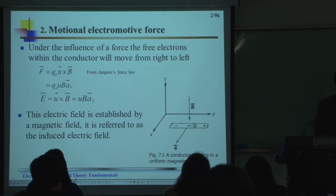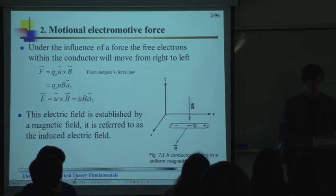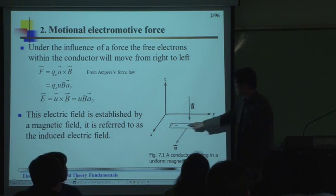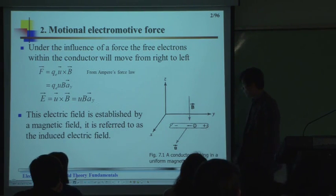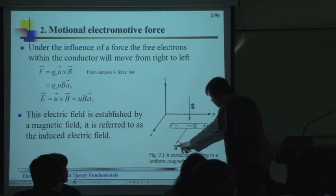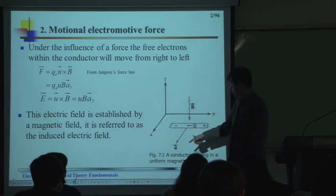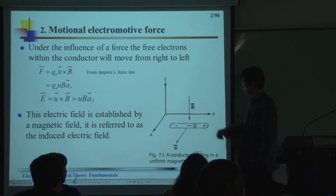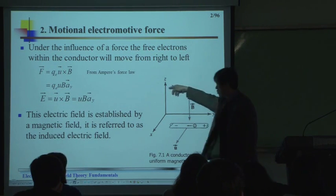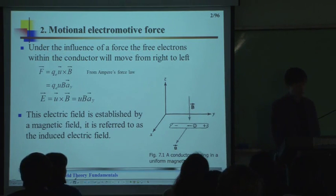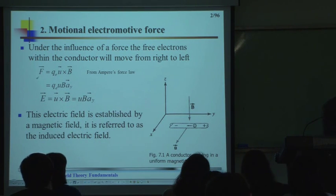The first thing — let's think about the motional electromotive force. Think about this wire; there is a metallic wire and there are many charges inside of it. If we move the wire in the X direction with velocity U, and there is a magnetic field in the minus Z direction, then we can find some force. That force can be written in this way.